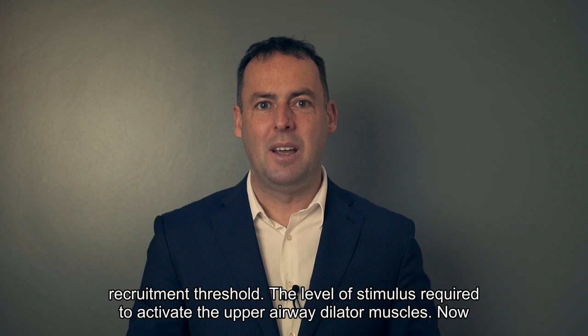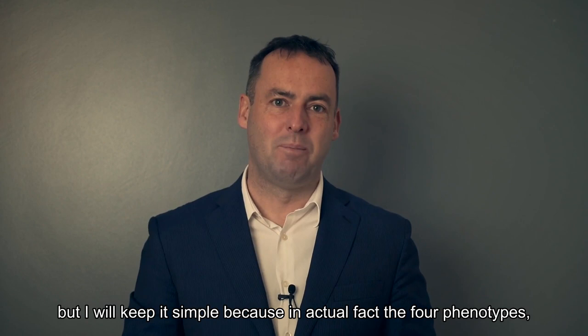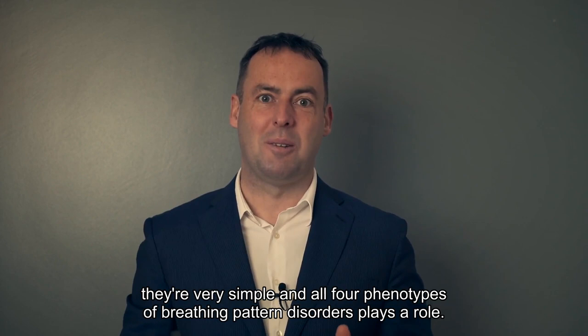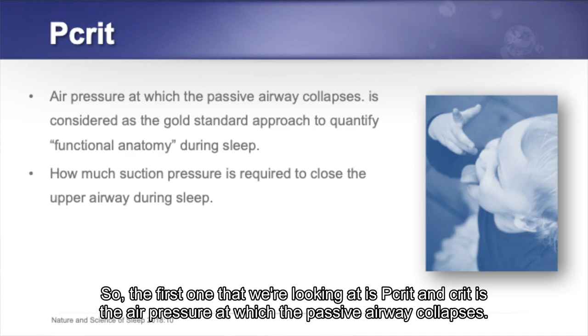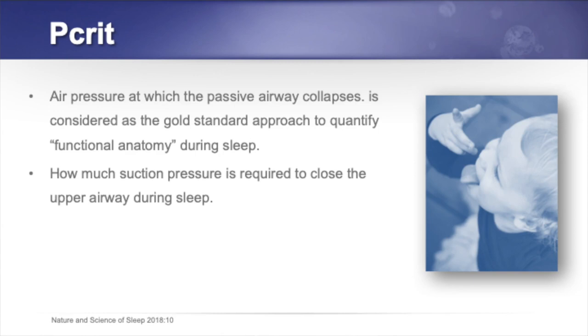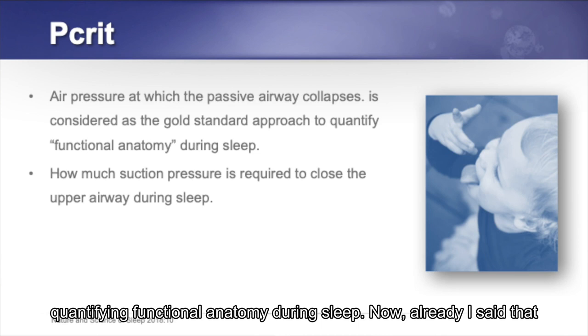I'm going to go through each one in detail but keep it simple, because all four phenotypes are actually quite straightforward, and breathing pattern disorders play a role with all four. The first one is PCRIT — the air pressure at which the passive airway collapses — and it's considered the gold standard approach to quantifying functional anatomy during sleep.